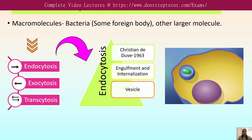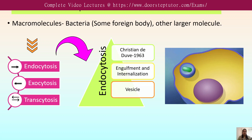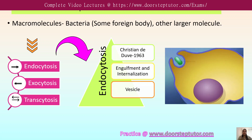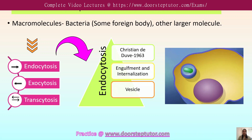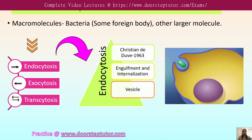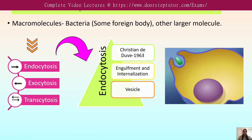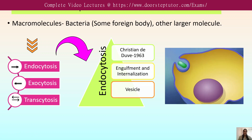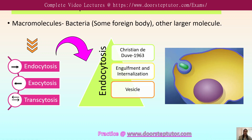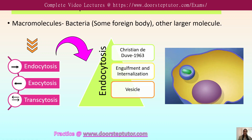But what about larger particles, or foreign particles that enter our body? How is it possible for them to enter so easily? The mechanism for transport of macromolecules involves the process called endocytosis. As the name suggests, endocytosis refers to movement into the inside of the cell.